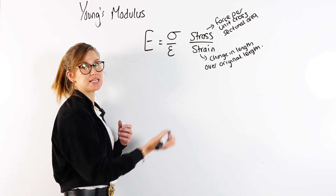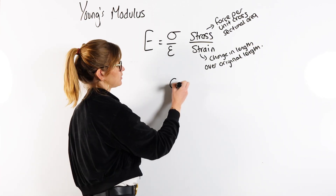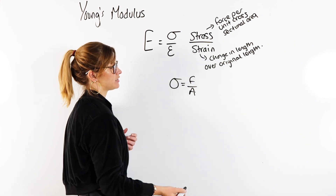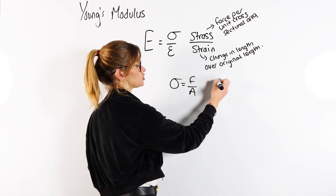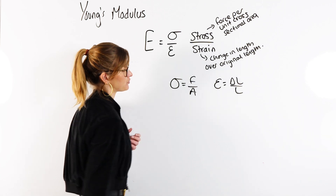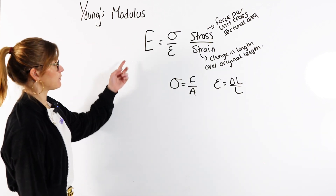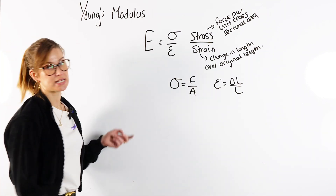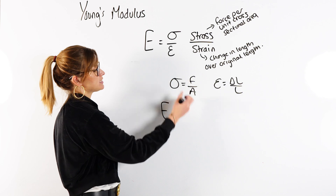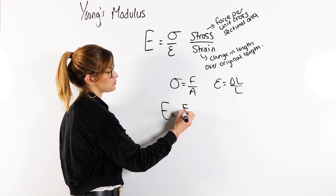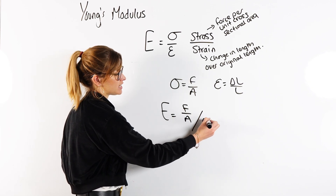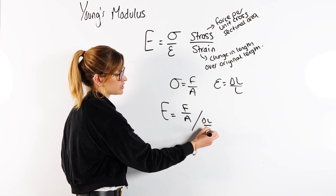So to write it again: stress is equal to force per unit cross-sectional area, and strain is equal to the change in length over the original length. So Young's Modulus is our stress — which is force per unit area — divided by our change in length over our original length.